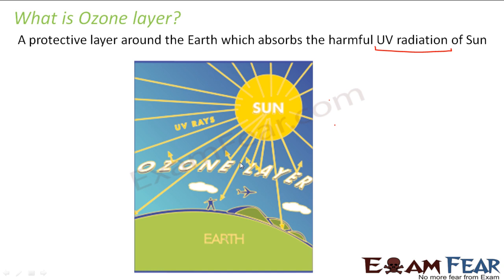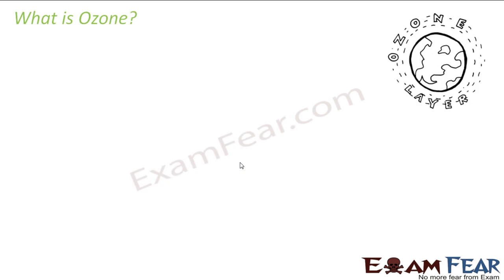Now you understand what we mean by depletion of the ozone layer — that means the ozone layer is vanishing. The presence of the ozone layer is needed for our protection. Interestingly, ozone is basically a deadly poison, so it is a paradox that a poison itself is acting as a protector. Ozone in itself is a poison, but this layer formed of ozone acts as protection from ultraviolet radiation.